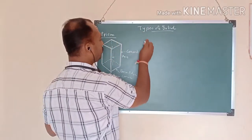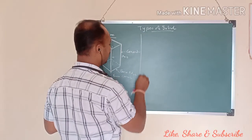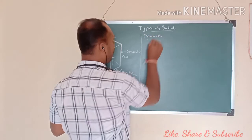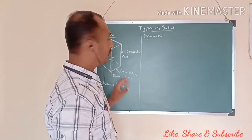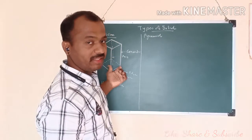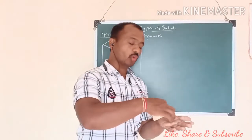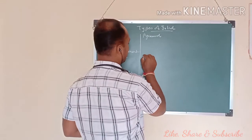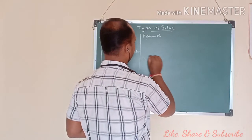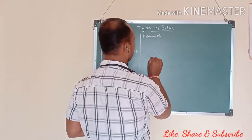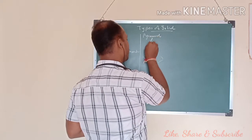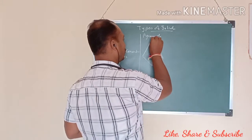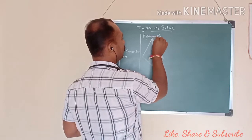The next type of solid is the pyramid. In the prism, the top face and base have the same shape. But in the pyramid, it has only a base, and the base is connected to the apex. It is like this — its top is connected to the apex.